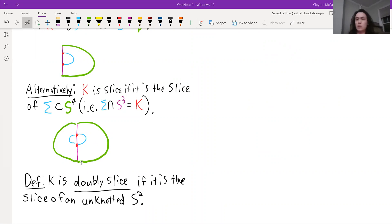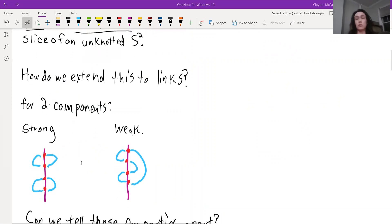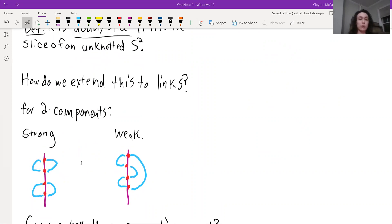This is what doubly slice is, but how do we do this in the context of links? Well, we're gonna restrict ourselves to two component links. For two component links, there's this dichotomy where you can think of strong double slicings which are cross sections of two component sphere unknots, versus weak double slicings which are cross sections of one component sphere unknots.